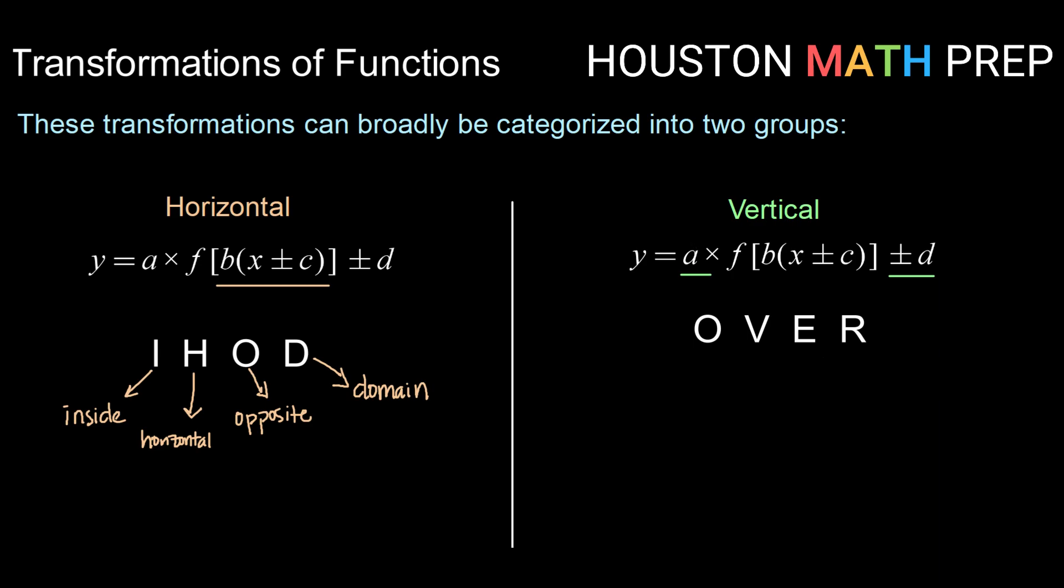Conversely, we have our a and our d here. Those are on the outside of our function notation. They are going to affect our graph in a vertical fashion. They are going to do exactly what they appear. And because they're vertical, affecting y values, they are going to affect our range.